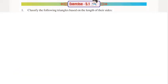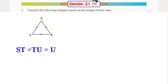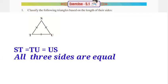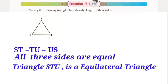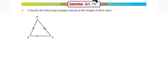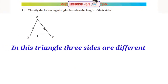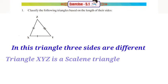Next, triangle STU. In this triangle, the side ST is equal to TU, which is equal to US. All three sides are equal, so this triangle is called an Equilateral Triangle. Next diagram, triangle XYZ — the three sides are different, so that triangle is called a Scalene Triangle.